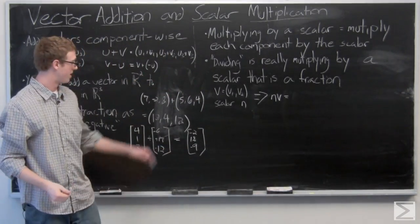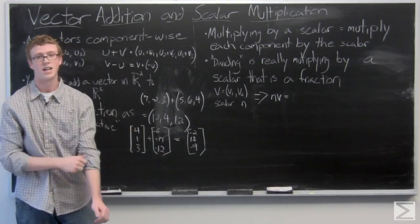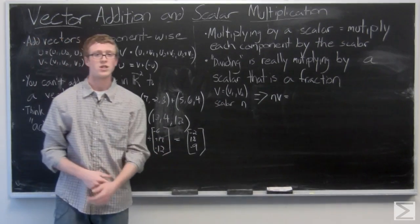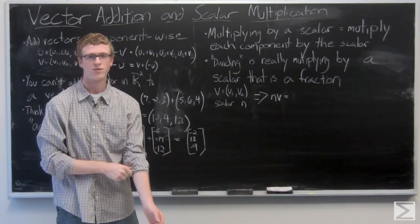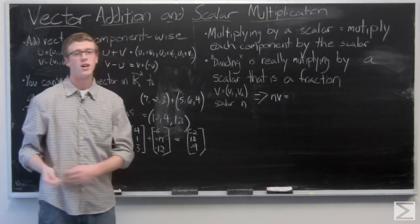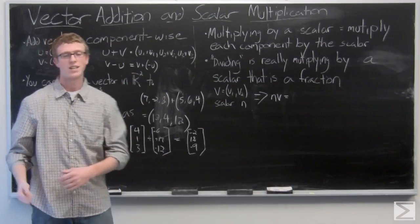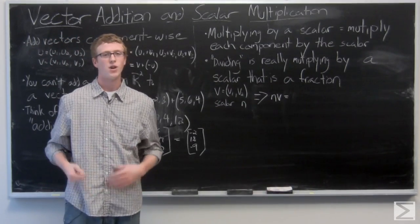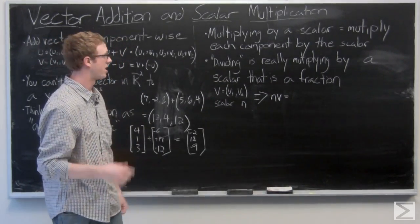And your resulting vector is going to be negative 2, 18, negative 9. So that's just the basics of vector addition. It's very simple. Just make sure that you're adding component wise. And when you're subtracting vectors, make sure you're adding a negative. We'll look at why in the geometric interpretation of that.